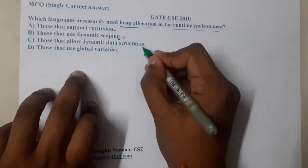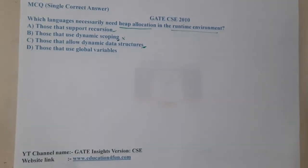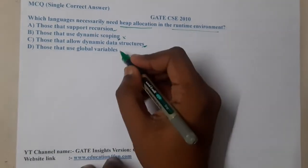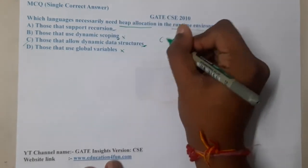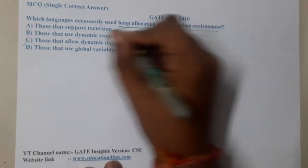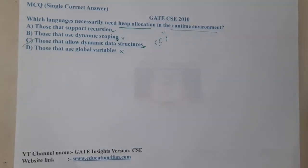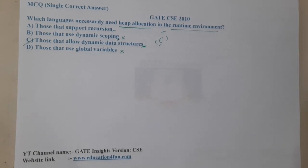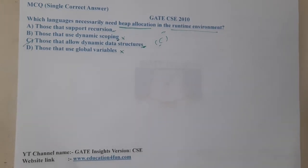So option C will be the most appropriate correct answer. And for option D — those with global variables — that doesn't make any sense. So option C should be the correct answer. This is a direct theoretical question, and I hope everyone got a clear idea with respect to this.